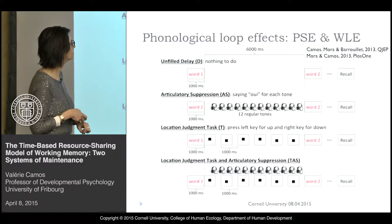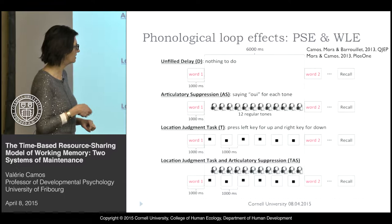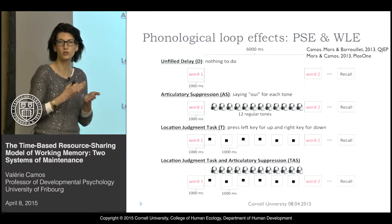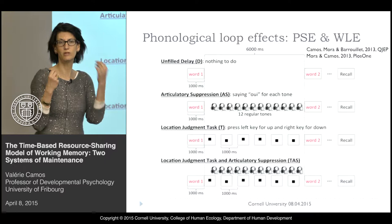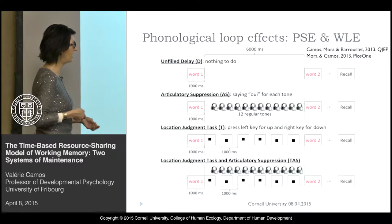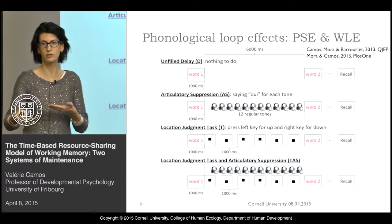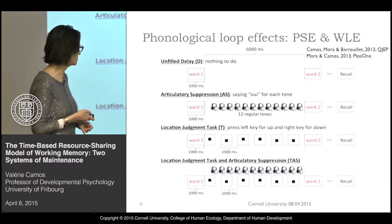On top of that, either participants have a silent task or they have to do an articulatory suppression. To control the pace of the articulatory suppression and ensure it's exactly the same amount across conditions, they have to say 'yes, yes' to a beep that gives them the rhythm. So here they only do articulatory suppression, and in the last condition they have the joint manipulation of concurrent articulation and a cognitive load or distraction of attention.